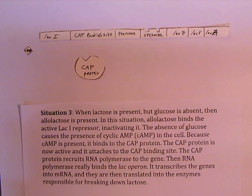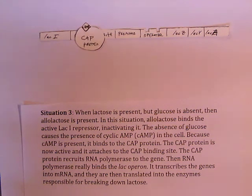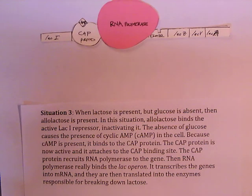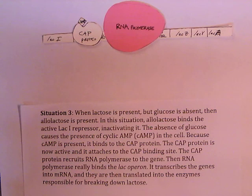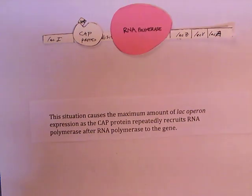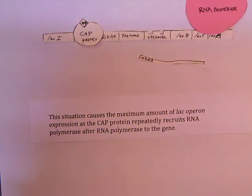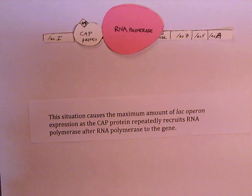Because cAMP is present, it binds to the CAP protein. The CAP protein is now active and attaches to the CAP binding site. The CAP protein recruits RNA polymerase to the gene. RNA polymerase then binds the lac operon, transcribes the genes into mRNA, and they are translated into the enzymes responsible for breaking down lactose. This situation causes the maximum amount of lac operon expression, as the CAP protein repeatedly recruits RNA polymerase to the gene.